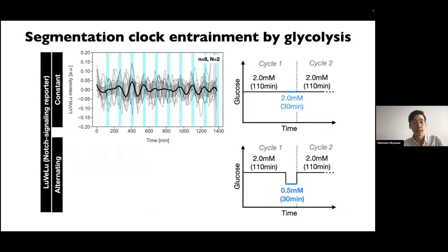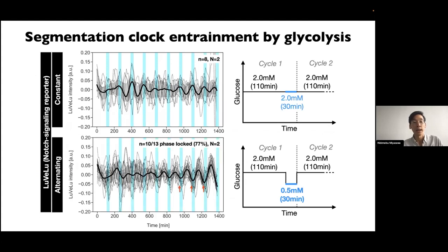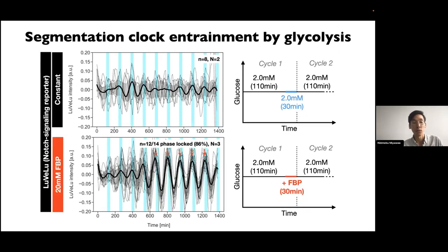I first tested a simple culture condition: we changed the glucose concentration from 2 millimolar to 0.5 millimolar every 140 minutes and asked whether such gentle perturbation can synchronize the segmentation clock. I was excited to find that it does. Periodic pulse of the glycolytic intermediate fructose-1,6-bisphosphate, or FBP, can also accomplish the same synchronization.